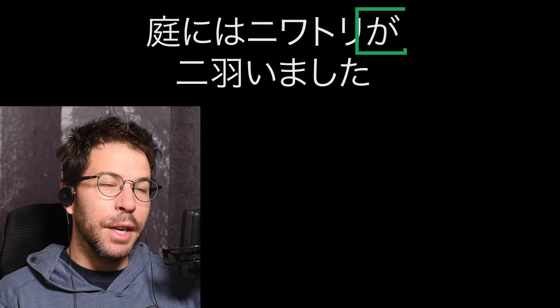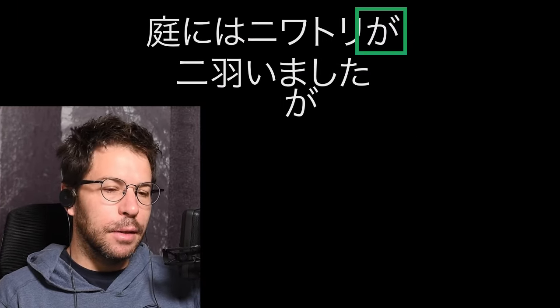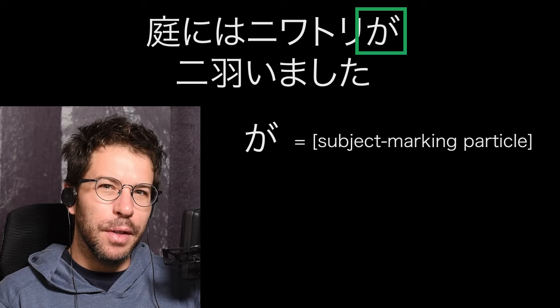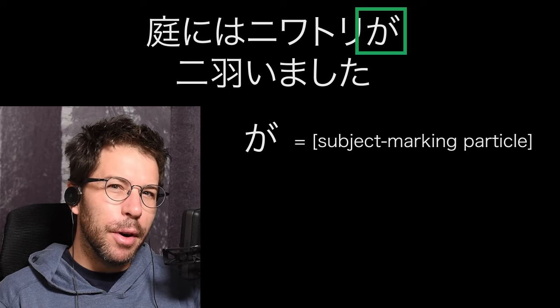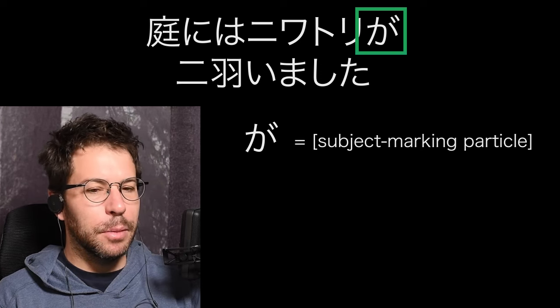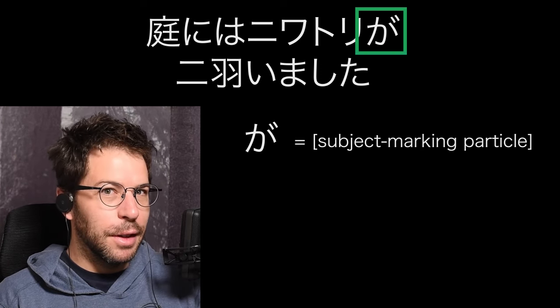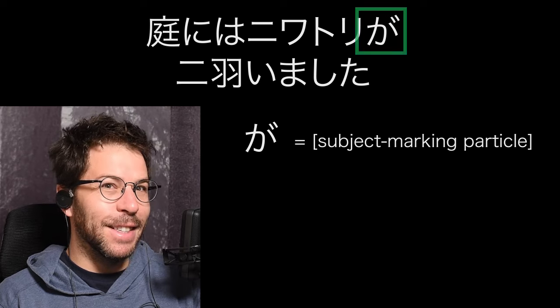A chicken. And then Niwa Niwa Niwatori ga — so ga is a subject-marking particle. You can think of it as the pointer particle also. It's just pointing out that there's a chicken — there are chickens.